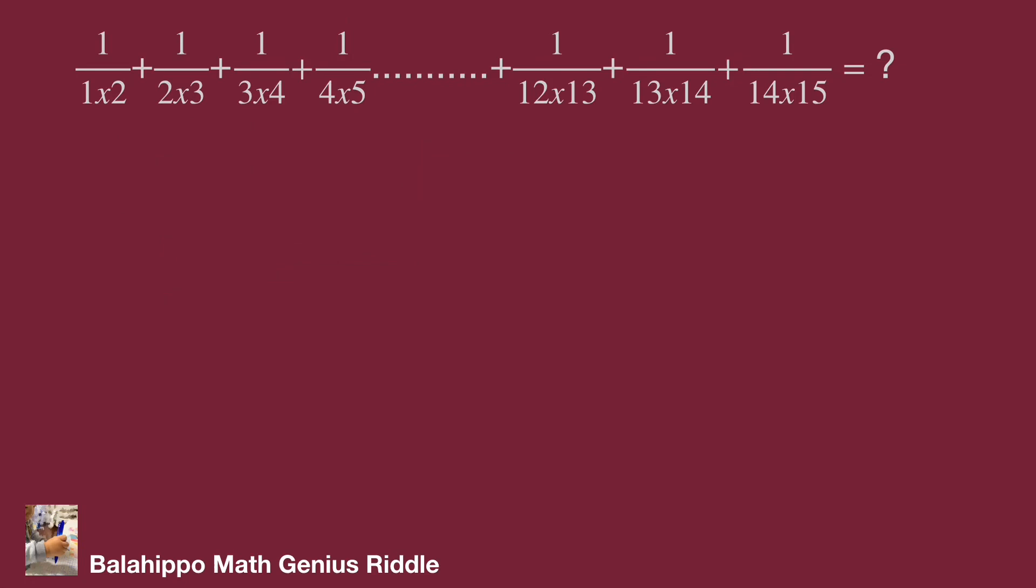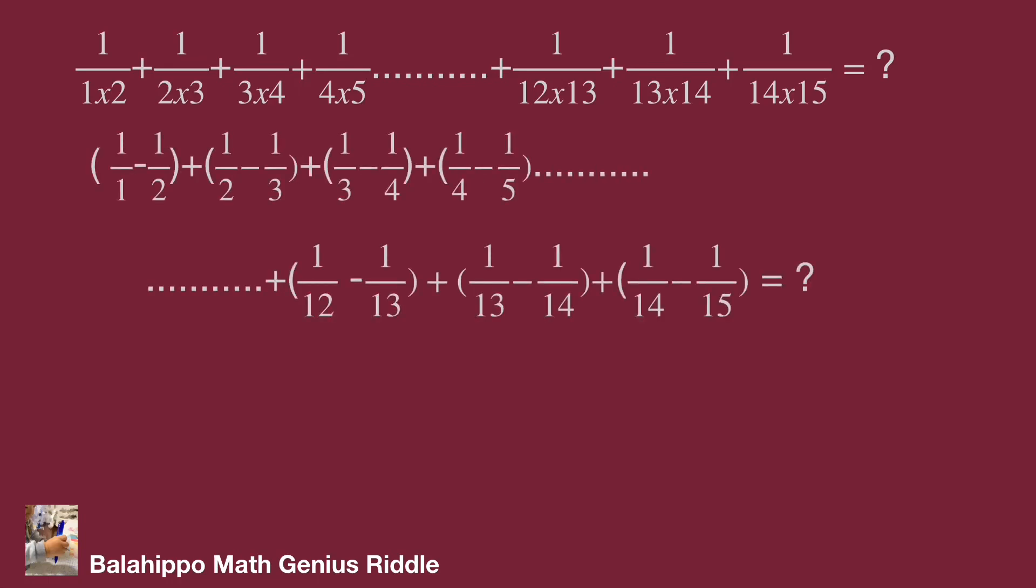So fit in this formula. Substitute 1 over 1 times 2 by 1 over 1 minus 1 over 2, 1 over 2 times 3 by 1 over 2 minus 1 over 3, and so on, to 1 over 14 times 15 equal to 1 over 14 minus 1 over 15.